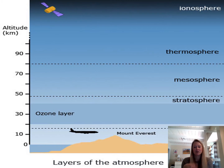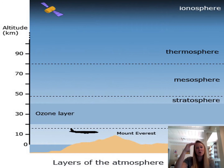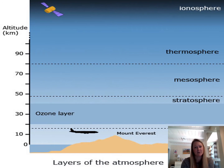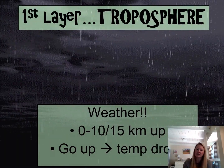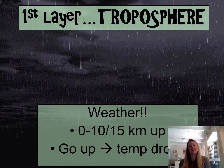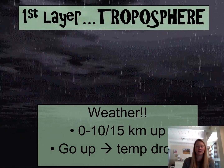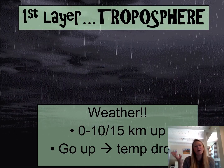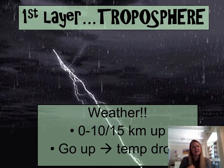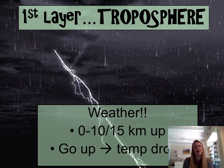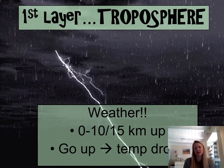The four layers are the troposphere, stratosphere, mesosphere, and thermosphere. As you go up, there are different characteristics with each of them that you must know. Let's start with the first layer — the one that we're in — which is the troposphere. This is the layer we live in, and it's where we experience weather.